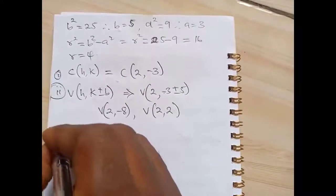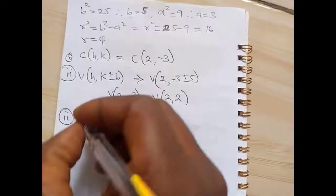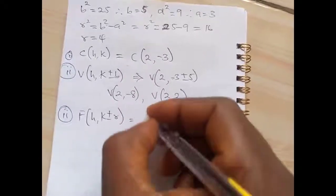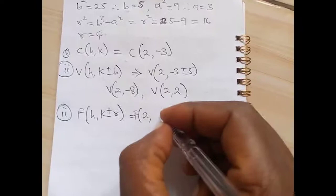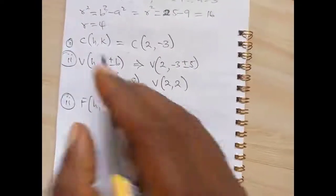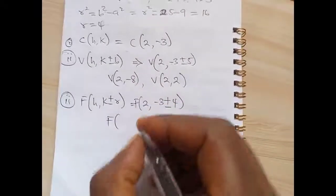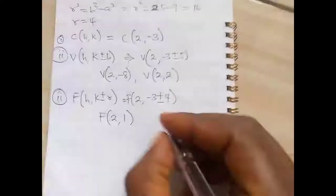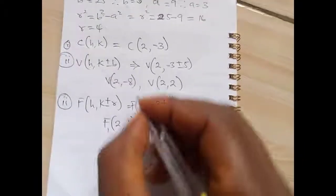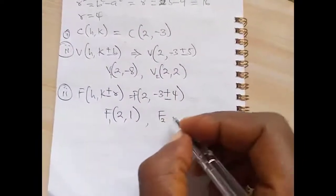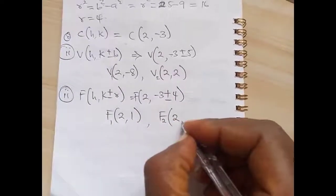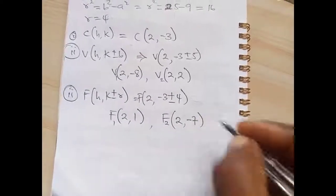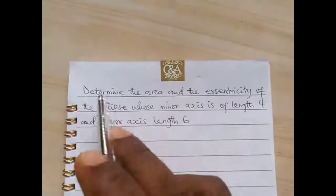For the foci, since b is greater, we use (h, k ± r): that's (2, −3 ± 4). So f₁ is (2, −3 + 4) = (2, 1) and f₂ is (2, −3 − 4) = (2, −7). Those are the foci.